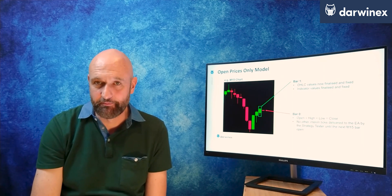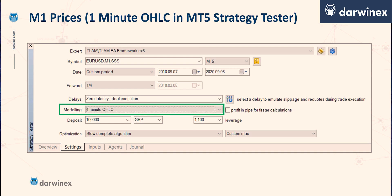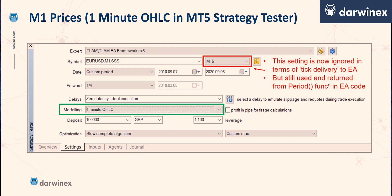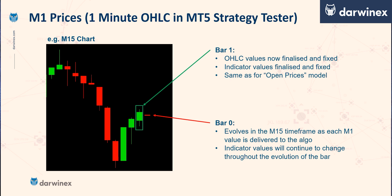The second backtesting model in the MT5 strategy tester is called one minute OHLC. The difference here is that four ticks per minute are delivered to the EA — the open, high, low and close prices for each one minute bar. Note that although the choice of timeframe had an impact on how many ticks got delivered when using the open prices model, this setting does not affect tick delivery at all when using the one minute OHLC model. Four ticks per minute get delivered to the EA regardless of the timeframe setting. The timeframe value is still important if you're using the period function in your EA's code. The values for bar 1 are equivalent to what they were in the previous model, because this bar is finalised and its OHLC values are therefore fixed.